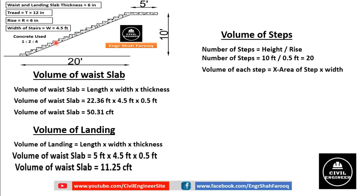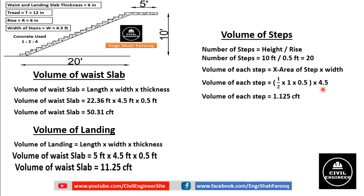Volume of each step equals cross-sectional area multiplied by its width. The step is triangular, so its cross-sectional area equals ½ × base × height, where base is 12 inches or 1 foot (the tread) and height is 6 inches or 0.5 feet (the rise). So volume of each step equals ½ × 1 × 0.5 × 4.5 = 1.125 cubic feet. Volume of all 20 steps equals 1.125 × 20 = 22.5 cubic feet.